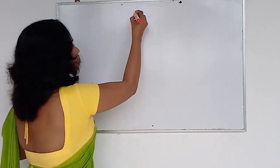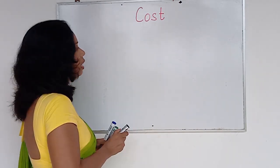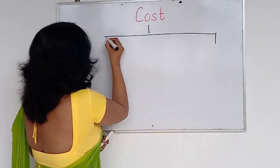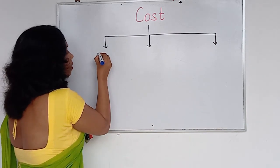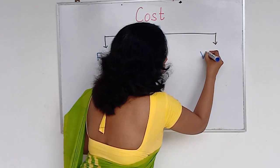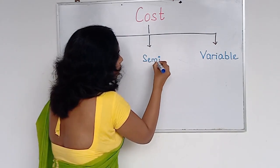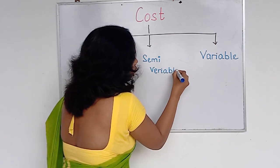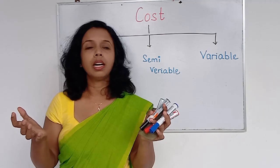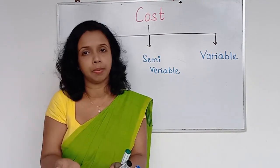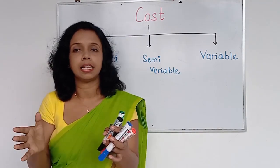So we talk about cost and we categorize it into three items: the first one is fixed cost, the second one is variable cost, and the third one is semi-variable cost. To discuss these three types, I'm going to use an example. Let's say my business is a manufacturing business — specifically, a small-scale garment factory.